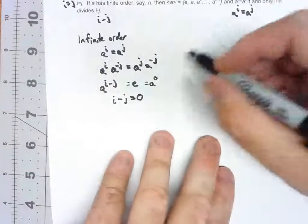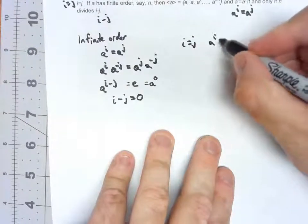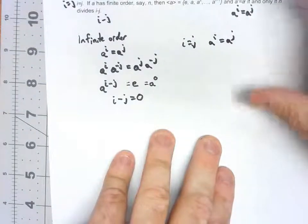The other direction, if we start with I equals J, that's just kind of immediate that A to the I has to equal A to the J. There's nothing to show there.